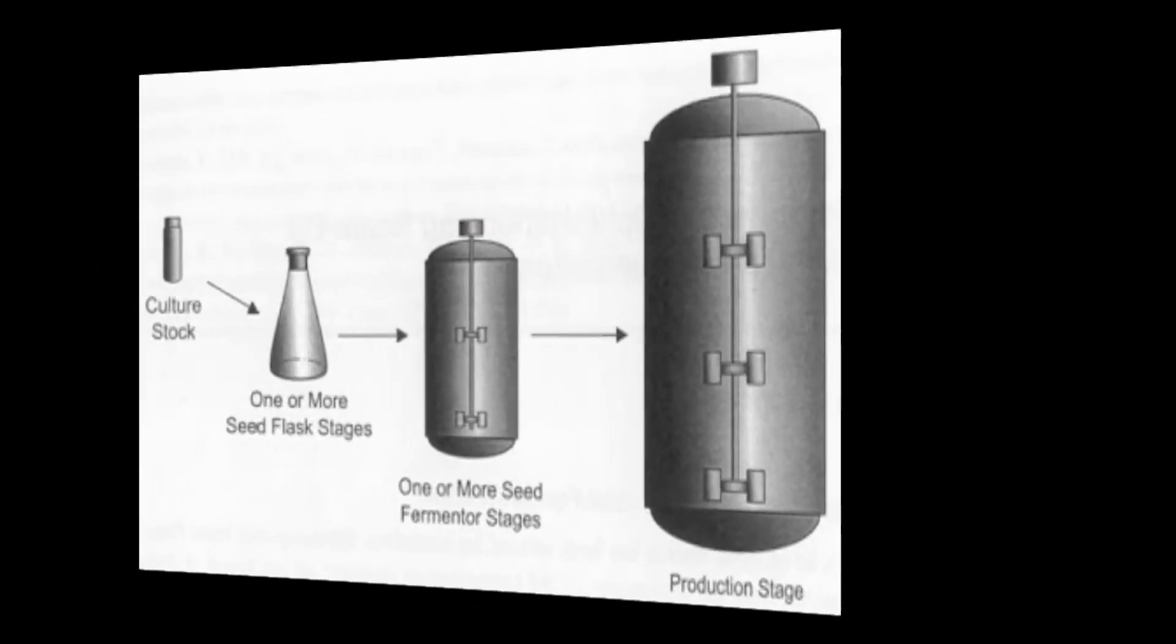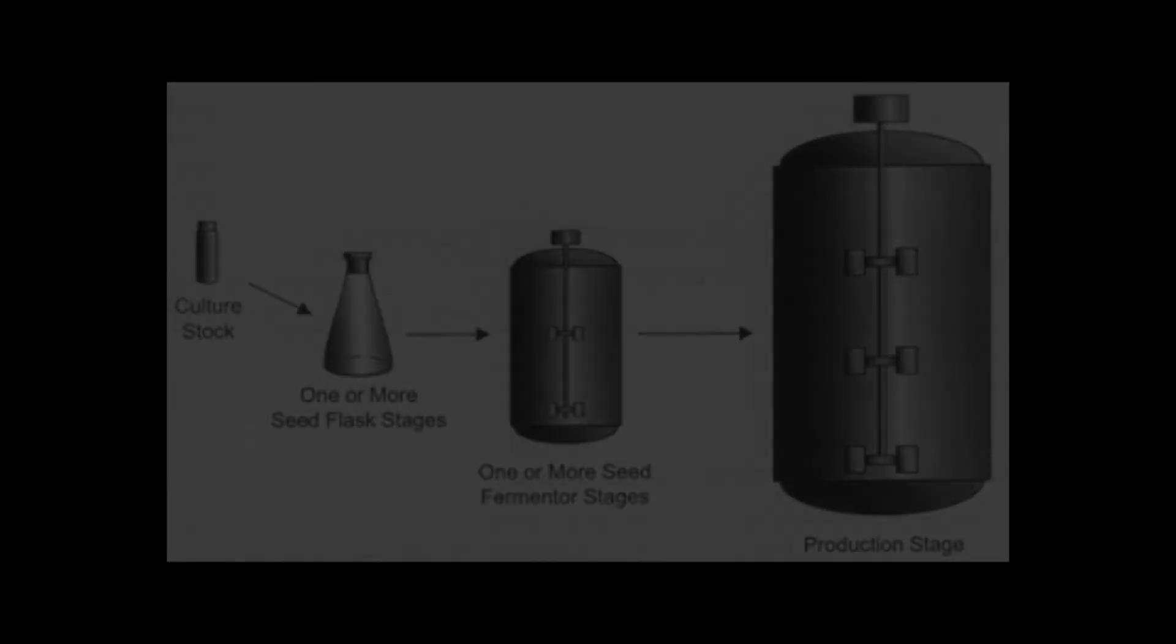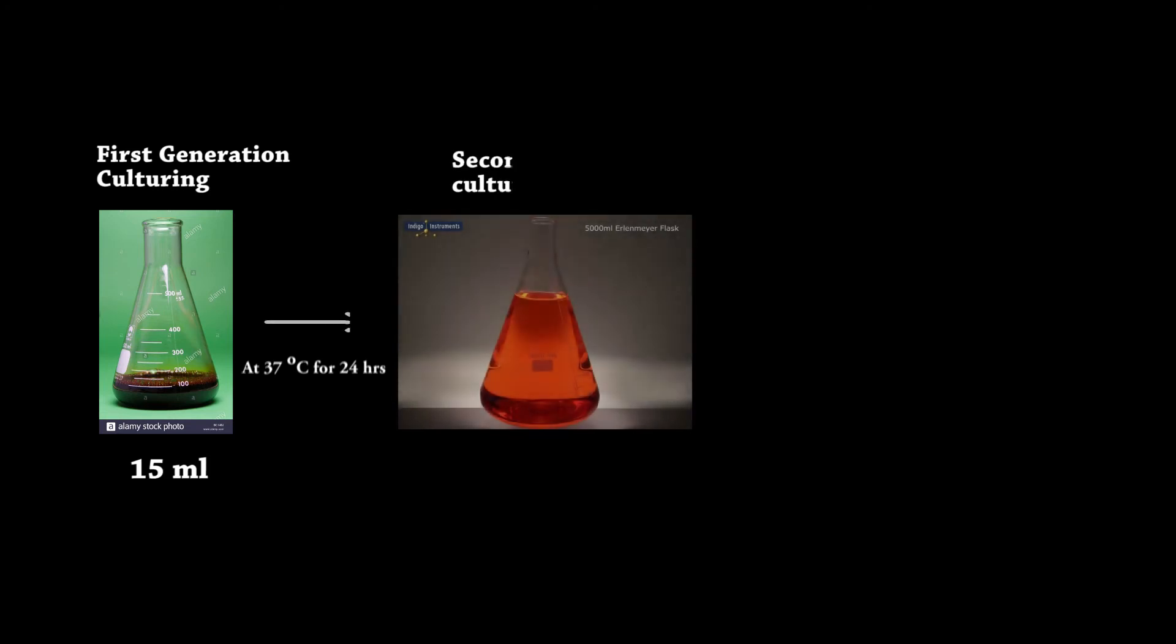This media is used for inoculum preparation. The inoculum development happens in three stages. The first stage is first generation culturing where 1 gram or 1 ml of stock culture is inoculated in 15 ml of media, followed by incubation at 37 degrees Celsius for 24 hours. The second generation culture is inoculated in 1000 gallons seed stage tank containing 75% of media.